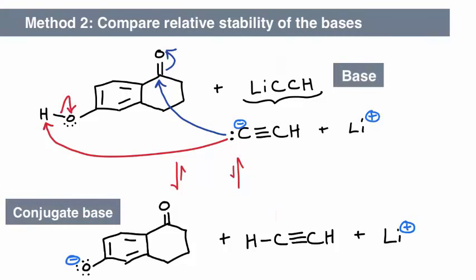When we compare the two bases, we see that the negative charge on the conjugate base is resonance-stabilized, while the negative charge in the base is not. The negative charge in the conjugate base resides on an oxygen atom, while the negative charge on the base resides on a carbon atom. The more electronegative oxygen can better stabilize the negative charge than the less electronegative carbon atom.